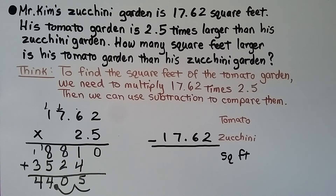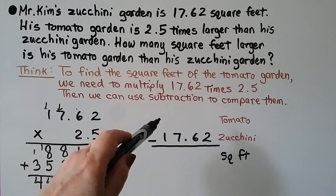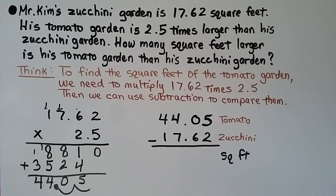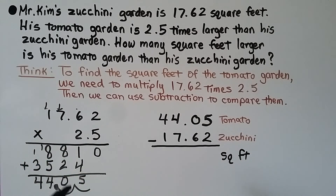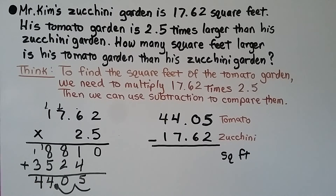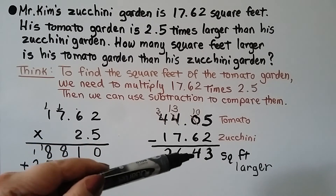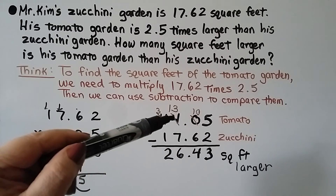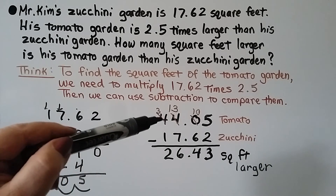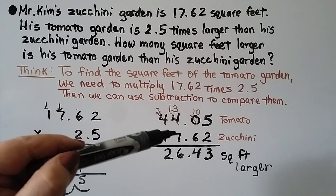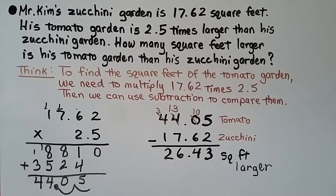We put 44 and 5 hundredths up here and subtract 17 and 62 hundredths, because we want to know how many square feet larger the tomato garden is. 5 minus 2 is 3; we can't take 6 from 0 so we regroup — the 4 becomes 3, giving us 10 minus 6 which is 4; regroup again — 13 minus 7 is 6; 3 minus 1 is 2. His tomato garden is 26 and 43 hundredths square feet larger than the zucchini garden.